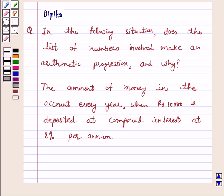Hi and welcome to the session. I am Deepika here. Let's discuss a question. In the following situation, does the list of numbers involved make an arithmetic progression and why? The amount of money in the account every year when rupees 10,000 is deposited at compound interest at 8% per annum.